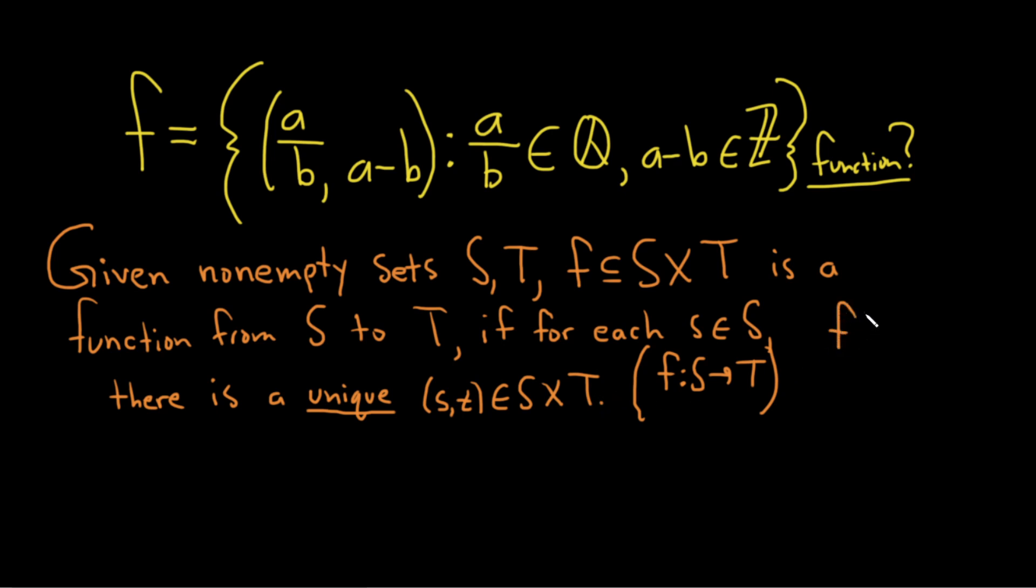For example, you can't have something like f of negative 1 equals 2, f of negative 1 equals 4. That wouldn't work. I mean, think about just basic algebra. When you plug in a number into a function, you get one answer, you don't get two answers. That wouldn't make any sense.